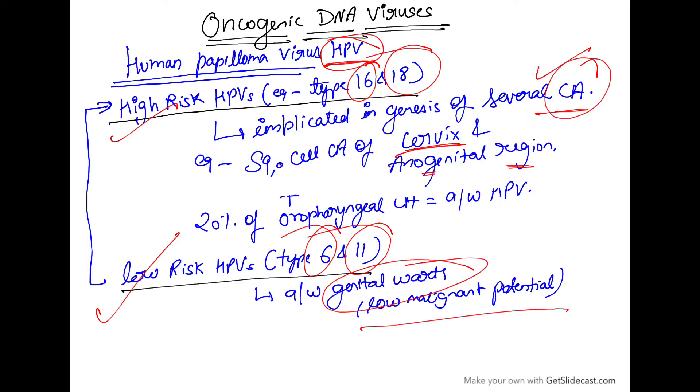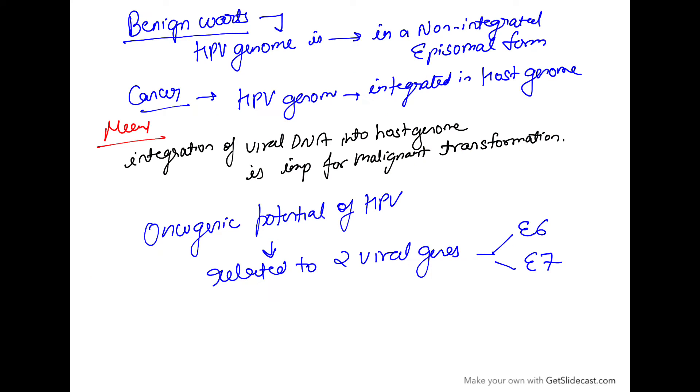High risk HPV are implicated in cancers, for example squamous cell carcinoma of cervix and anogenital region, and even 20% of oropharyngeal carcinomas are associated with HPV. Genital warts are associated with low risk HPV type 6 and 11.